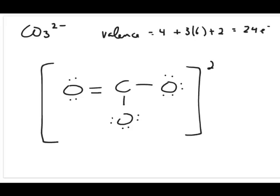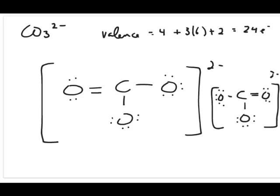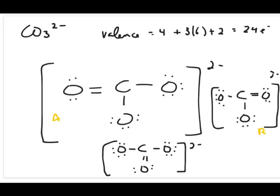That's one resonance structure, but of course it's possible to draw it other ways with the double bond in different positions. So we can draw another resonance structure with the double bond in a different position, and another possibility is to have the double bond at the bottom. So you have three resonance structures total — let's call them A, B, and C.